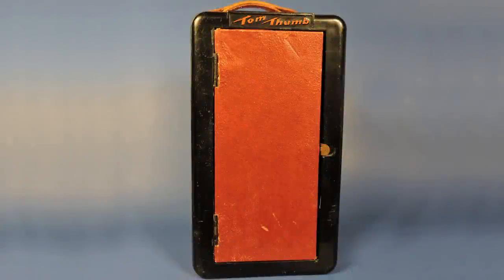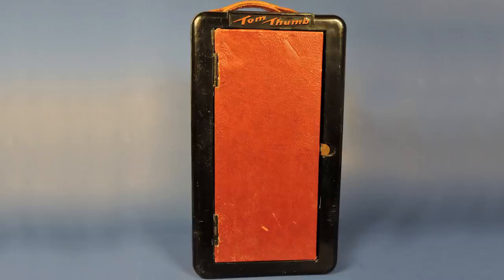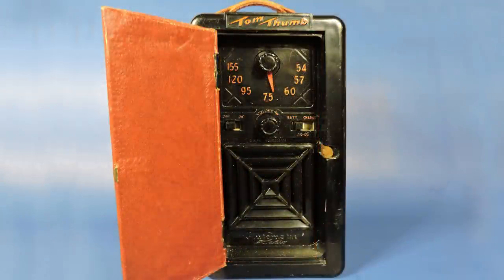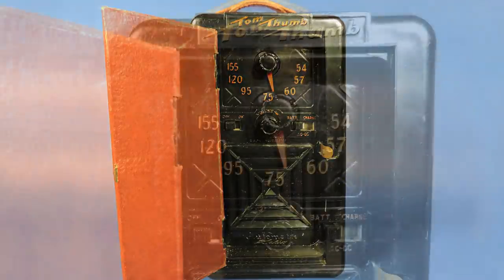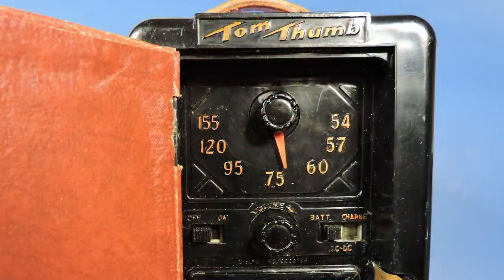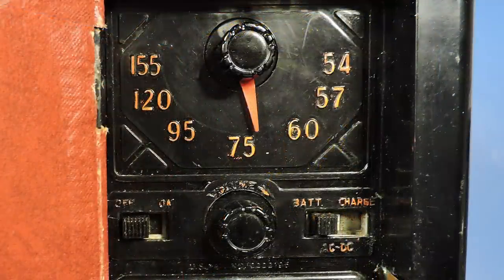This is the Tom Thumb portable radio. It is vacuum tube. Here I've opened up the front of the radio and let's take a closer look at the top. That's where all the controls are.